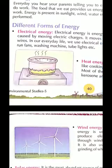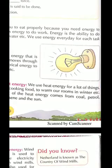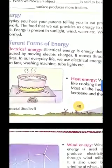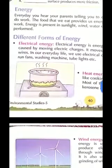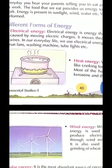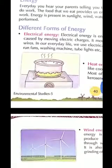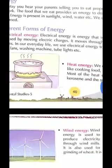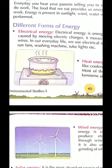So let us talk about different forms of energy. First we have electrical energy. Aap electrical energy — aap dekhte ho light hai, fan hai, cooler hai, AC hai. How do all these things run? So all these things run with electrical energy. Electric charges hote hain jo move karte hain aur electricity flow karte hain — so it moves through wires. Gharon mein wires hote hain, toh wires ke through hi electrical energy pass hoti hai. In our everyday life, we use electrical energy to run fans, washing machine, tube lights, etc.